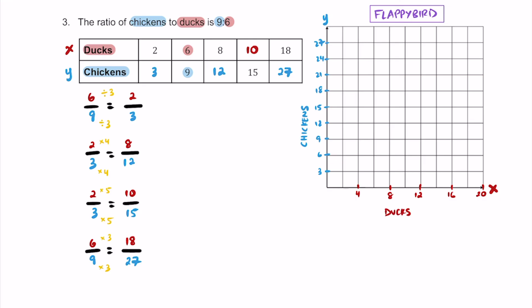Once you label your x-axis, I went by 2s along the x-axis and 3s along the y-axis. I only labeled every other value — 4, 8, 12, 16, 20 — to save space. Then plot the ordered pairs: (2, 3), (6, 9), (8, 12), (10, 15), and (18, 27). These ratios represent a linear relationship, so we can draw a straight line through them.